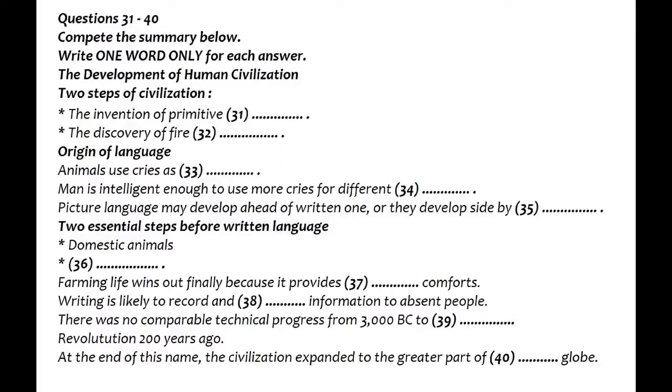Two important stages came not so long before the dawn of written history. The first was the domestication of animals. The second was agriculture. Agriculture was a step in human progress to which, subsequently, there was nothing comparable until our own machine age. Agriculture made possible an immense increase in the number of the human species in the regions where it could be successfully practiced. These were, at first, only those in which nature fertilized the soil after each harvest. Agriculture met with violent resistance from the pastoral nomads, but the agricultural way of life prevailed in the end because of the physical comforts it provided.